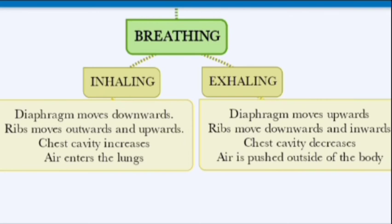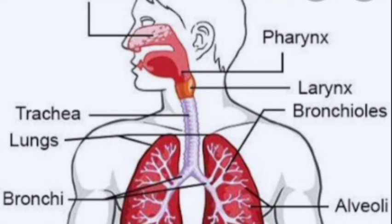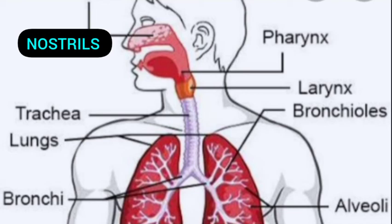Now let us look at the respiratory system in humans. Air enters through the nostrils, passes through the pharynx, then enters the larynx, and proceeds into the trachea. The trachea is a ring-like structure — it has rings of cartilage — so that the air passage always remains open and air can easily flow in and out.